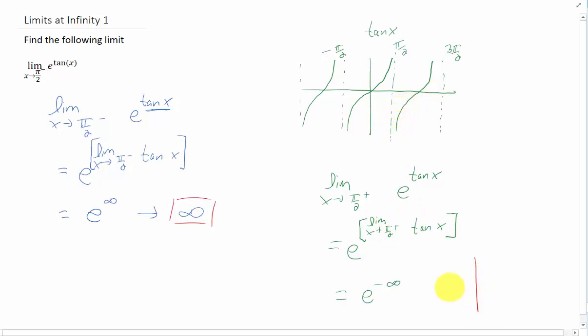And if we took a look at a graph of e to the x, as x gets really big, our e to the x function gets really big. We said that over here in this answer. But as x approaches negative infinity, you'll notice that this graph approaches 0. So e to the negative infinity approaches 0.